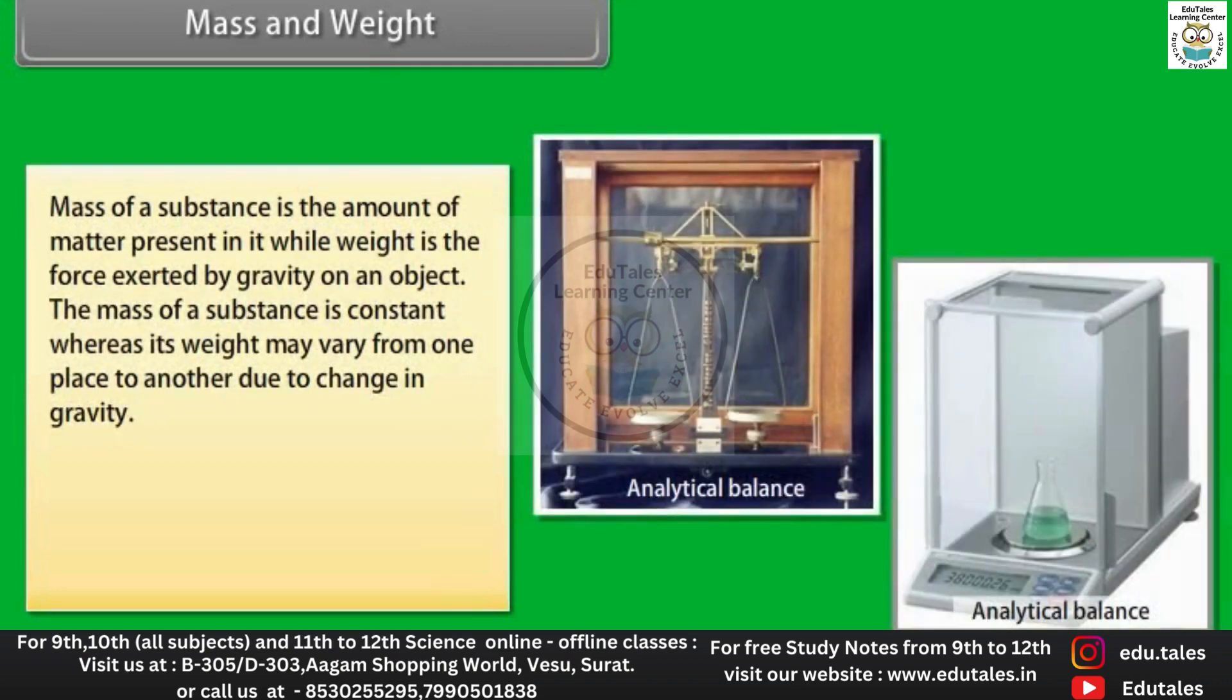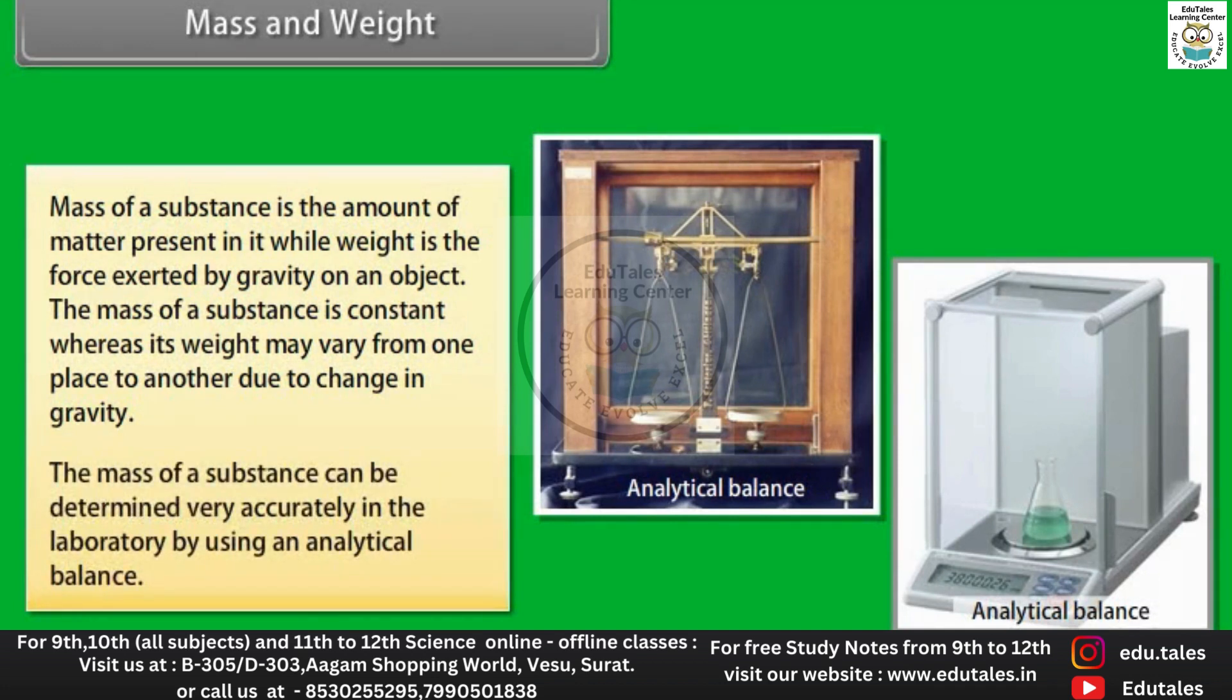Mass of a substance is the amount of matter present in it, while weight is the force exerted by gravity on an object. The mass of a substance is constant, whereas its weight may vary from one place to another due to change in gravity. The mass of a substance can be determined very accurately in the laboratory by using an analytical balance.